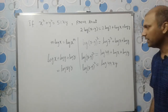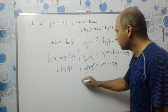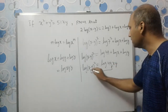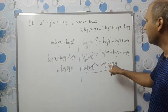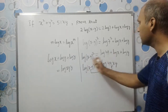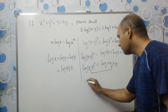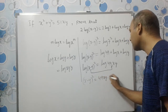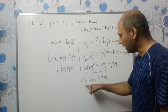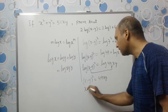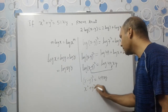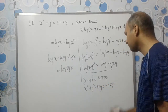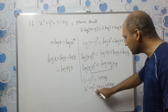We have log on both sides, so we can cancel the logs. This means (x - y)² must equal 49xy. Let us expand using the identity: (x - y)² = x² + y² - 2xy = 49xy.